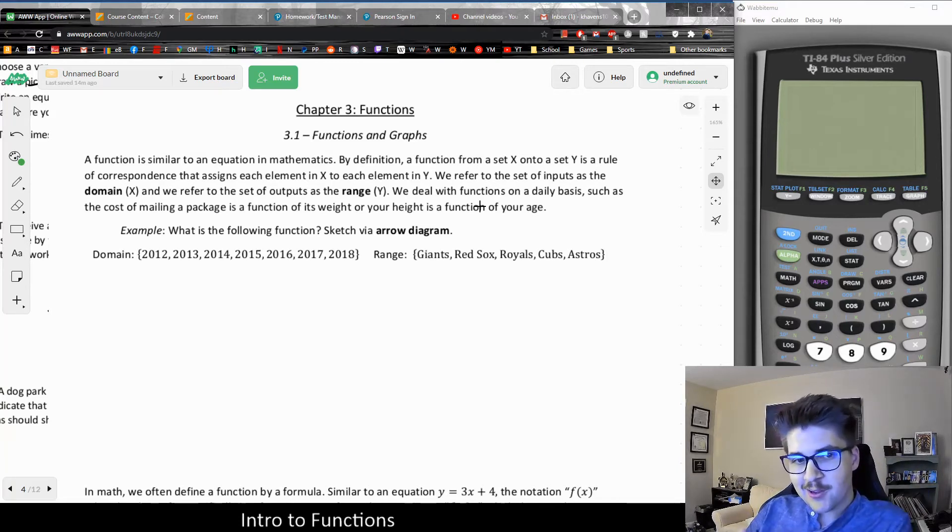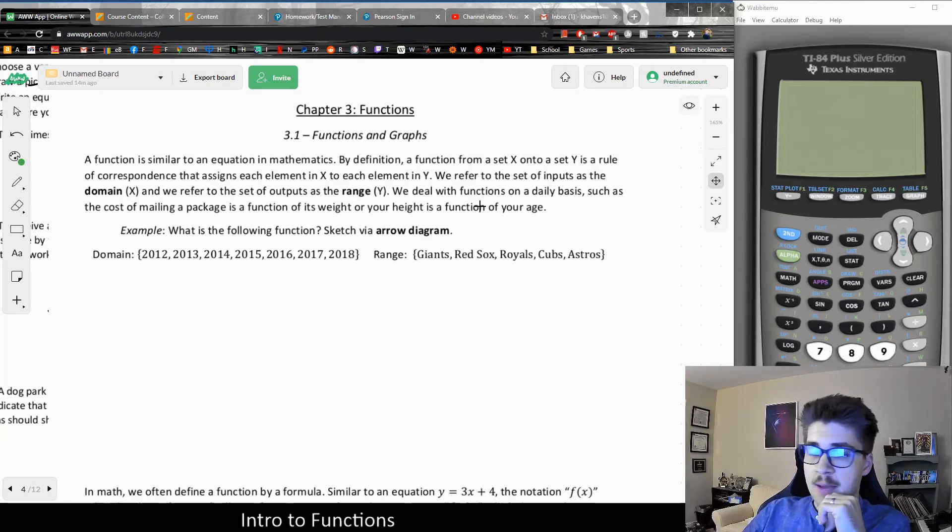Whereas in this case, our function is not like a mathematical calculation. Instead, it would take the input, which is the year, and grind through that, and tell us what is the output, the winner of the World Series in that particular year.